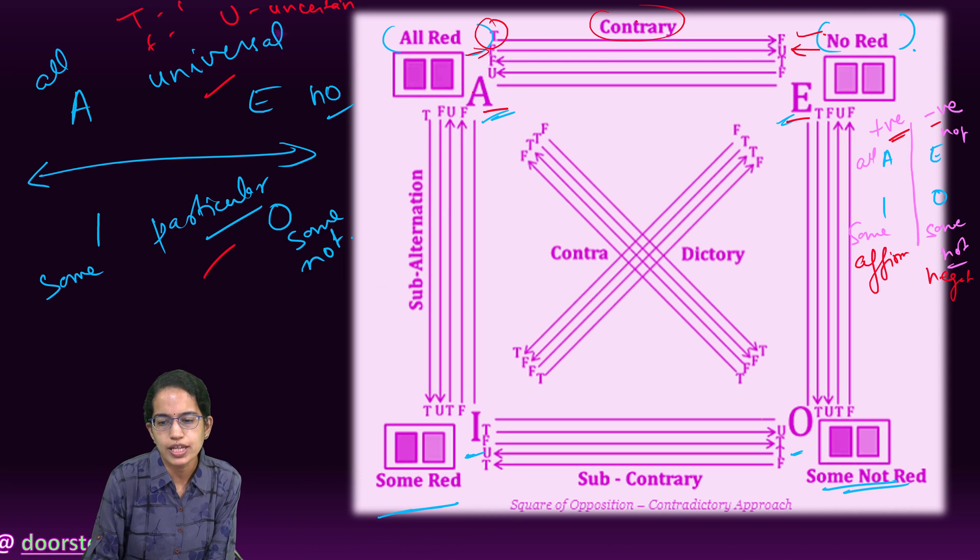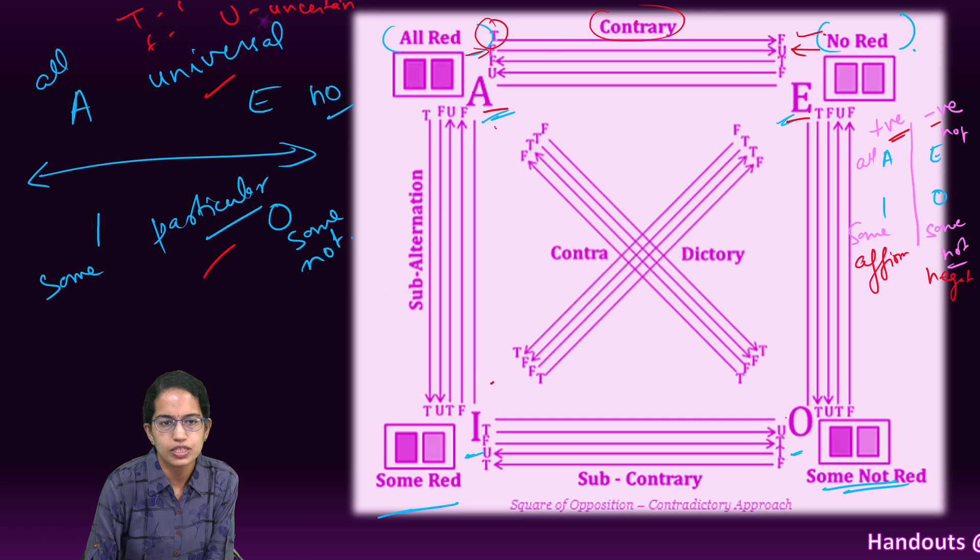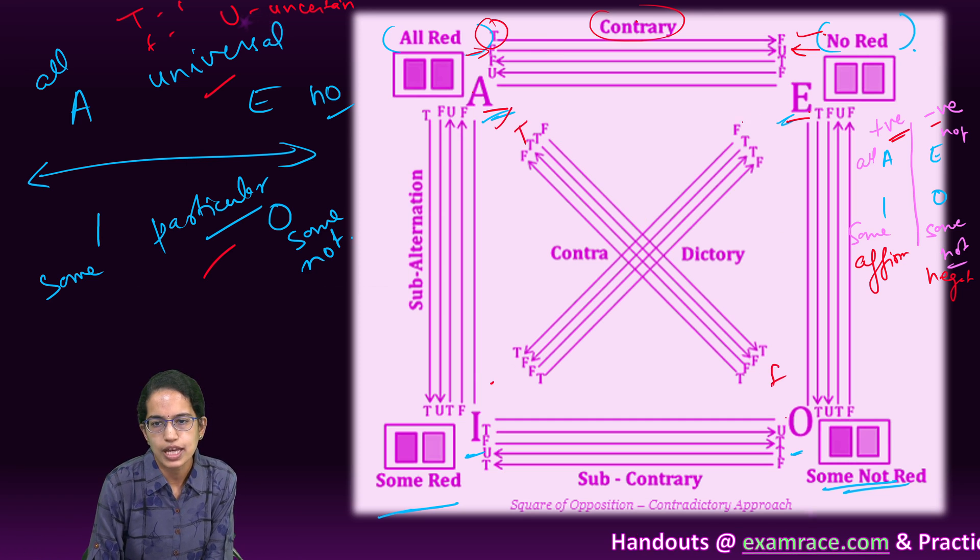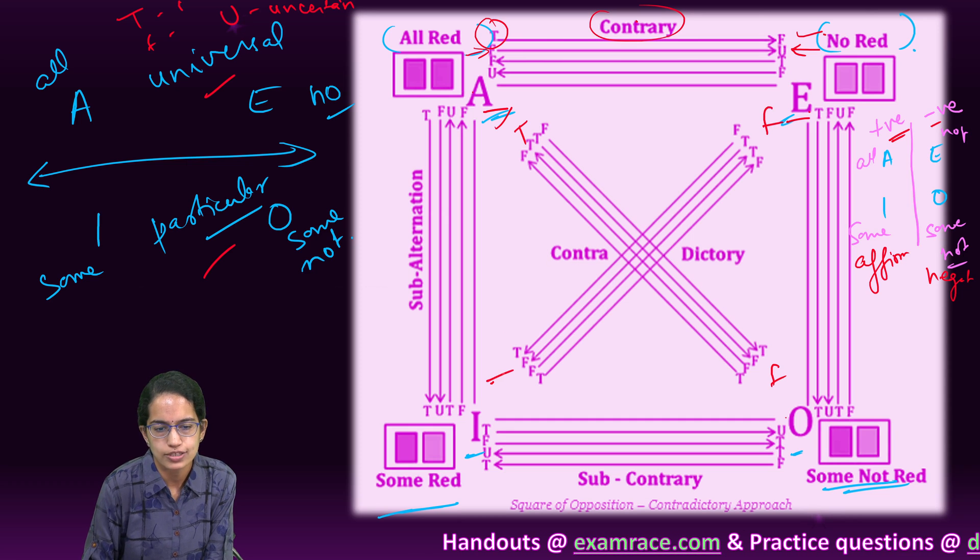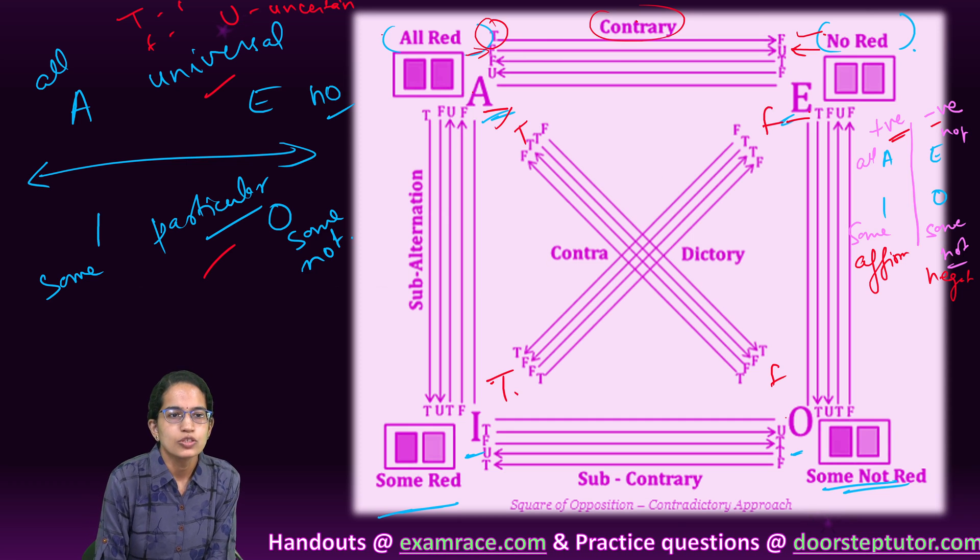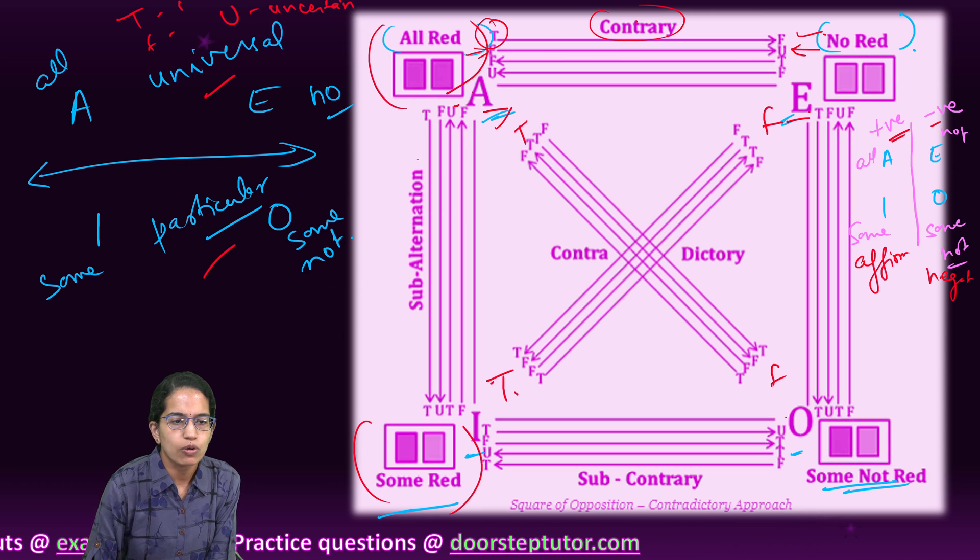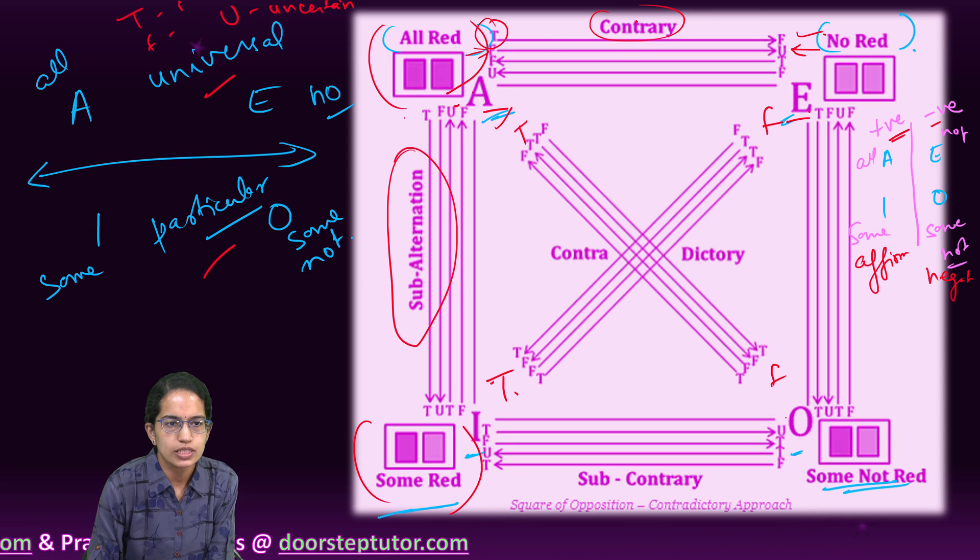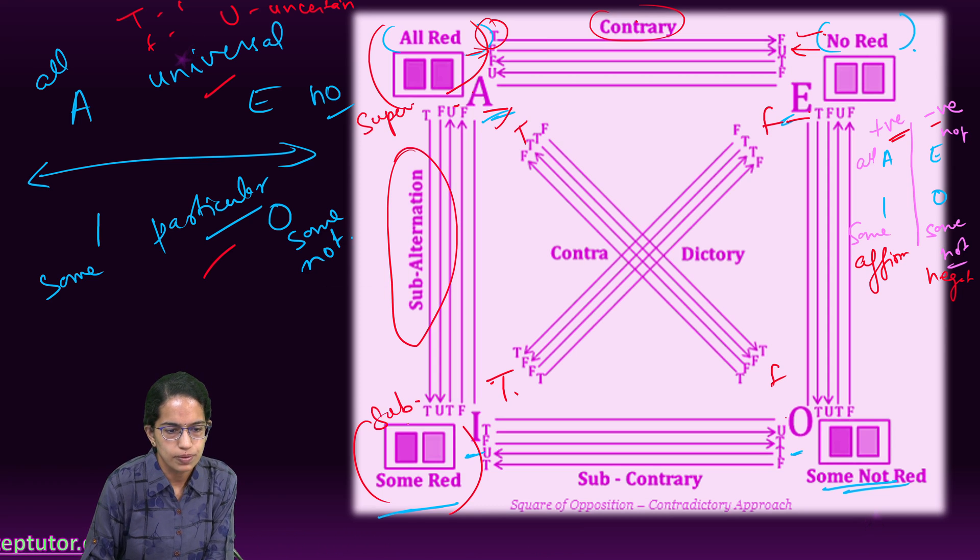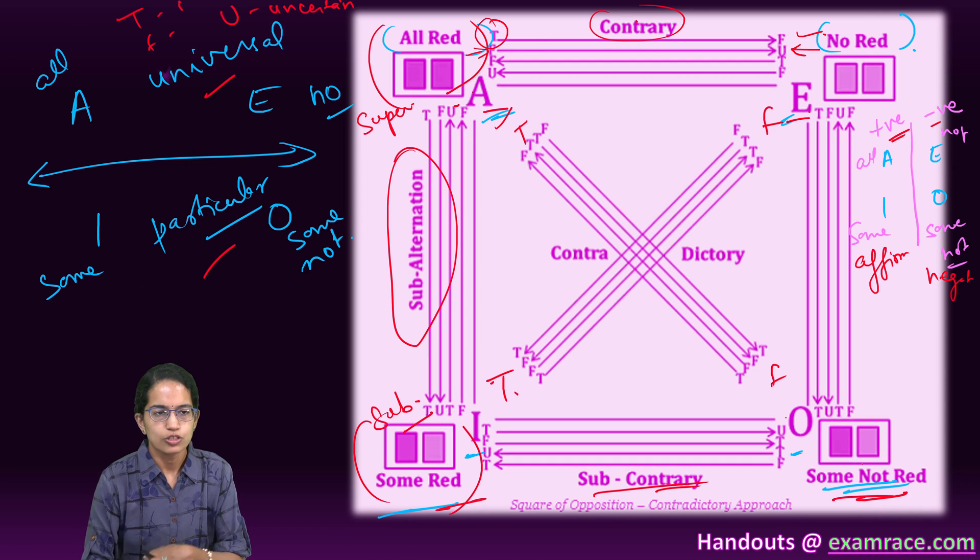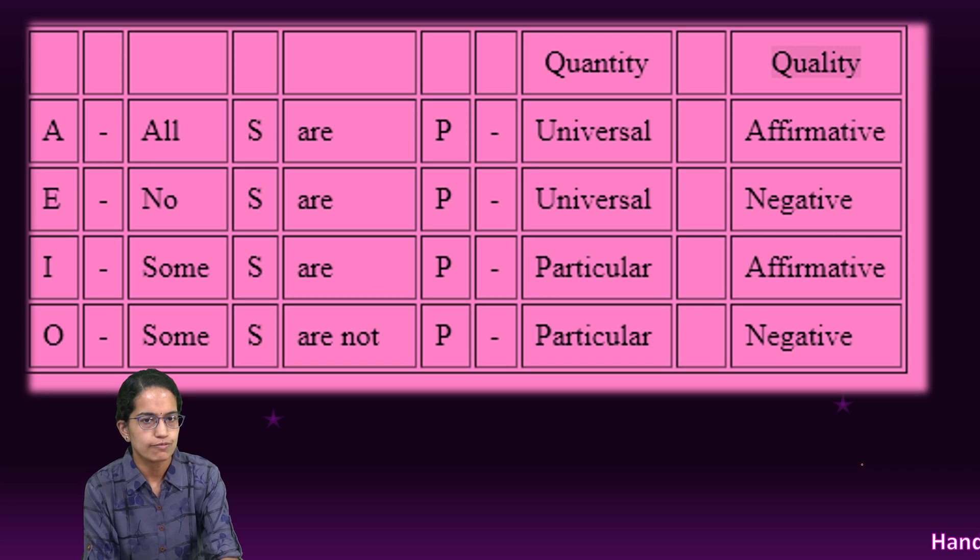The relation between A and O and E and I is contradictory. If this is true, this has to be false. If this is true, this has to be false. If this is false, this has to be true. And vice versa. So this is super and this is sub, and we call this relation as subaltern relation. And then there is subcontrary between some and some not. So those are some of the common relations we have talked about.